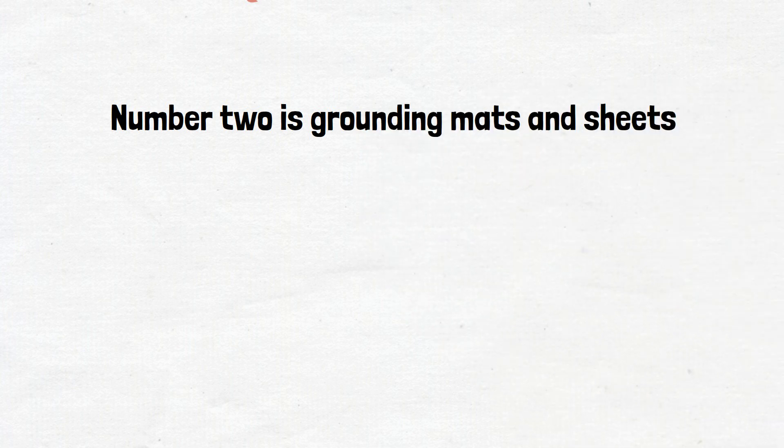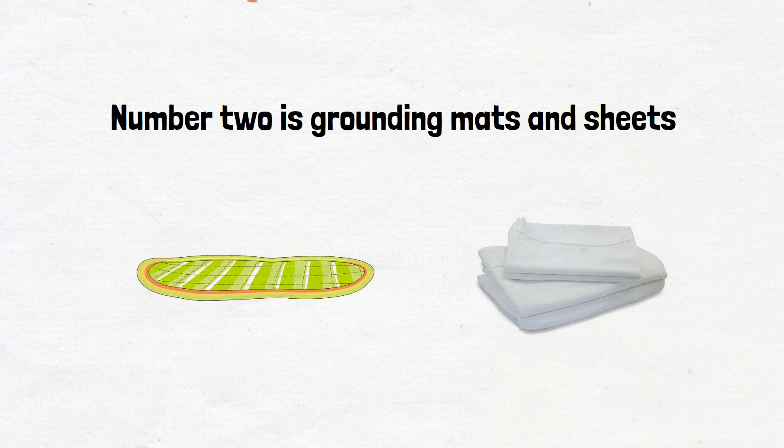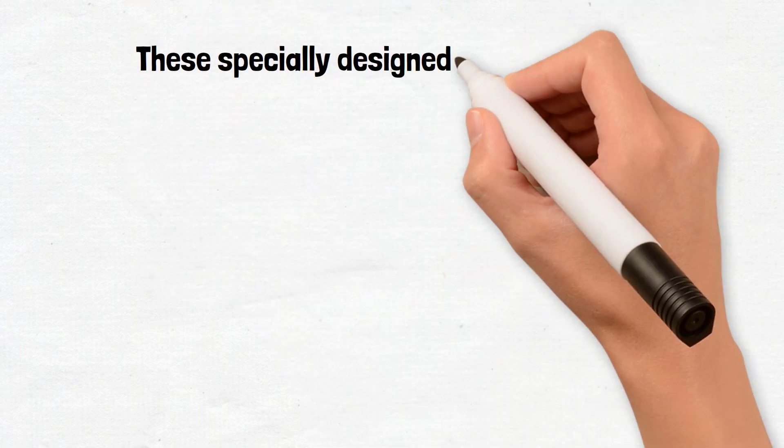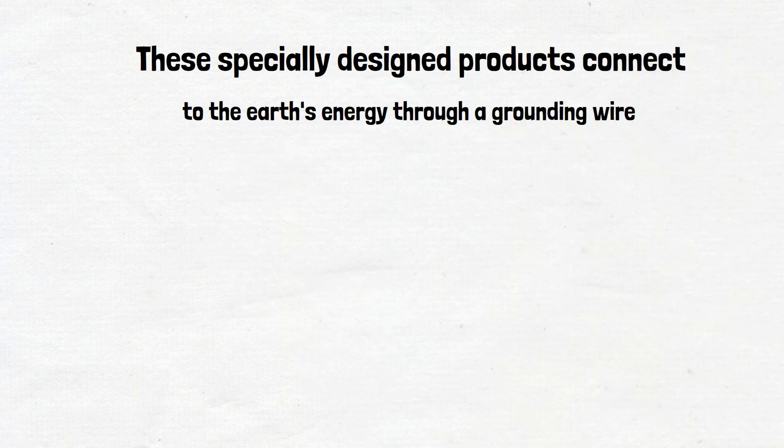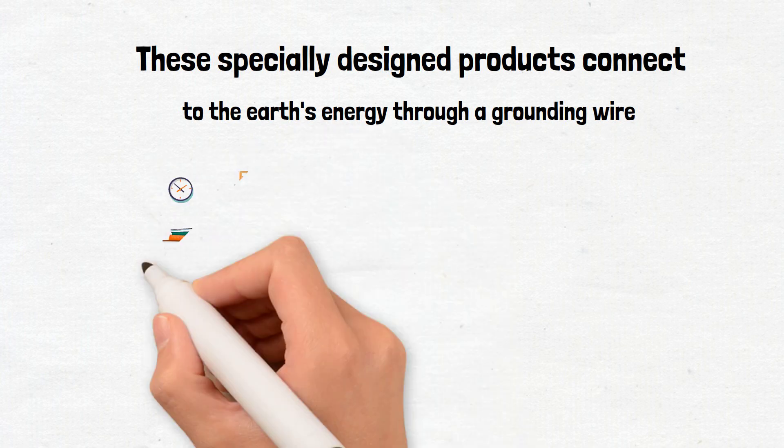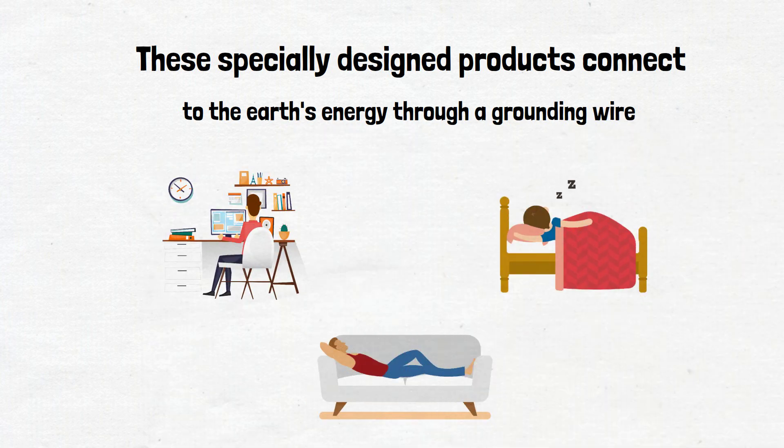Number two is grounding mats and sheets. If going barefoot outdoors isn't possible or convenient for you, consider using grounding mats or sheets indoors. These specially designed products connect to the Earth's energy through a grounding wire, allowing you to reap the benefits of earthing while you're working at your desk, sleeping in your bed, or relaxing on the couch.